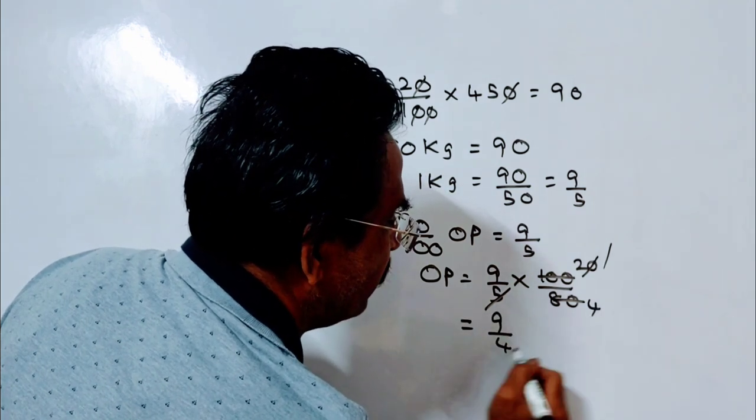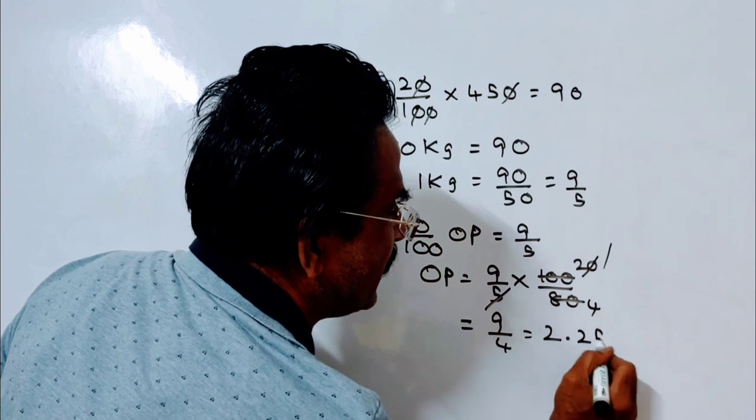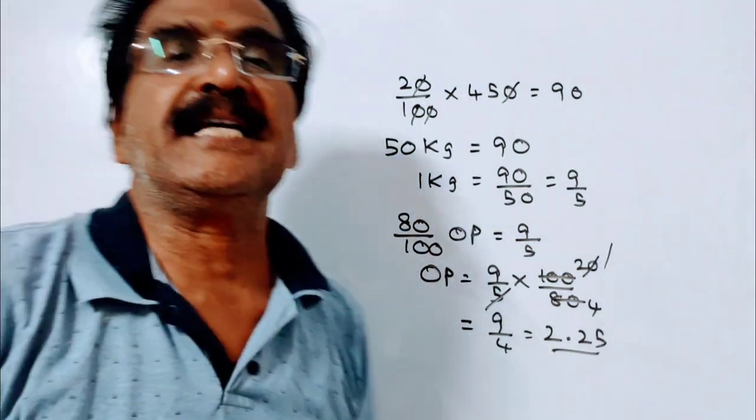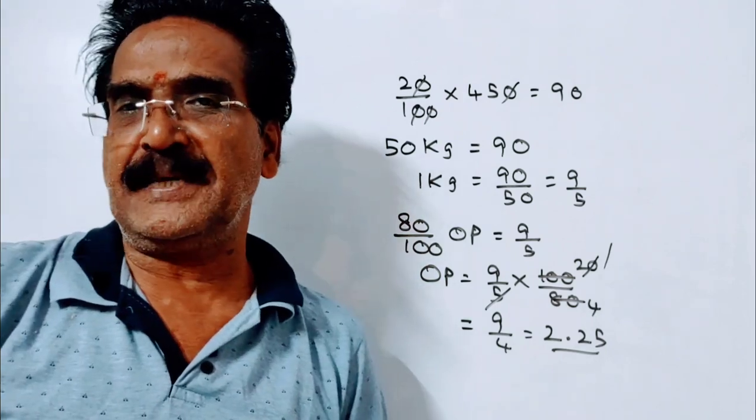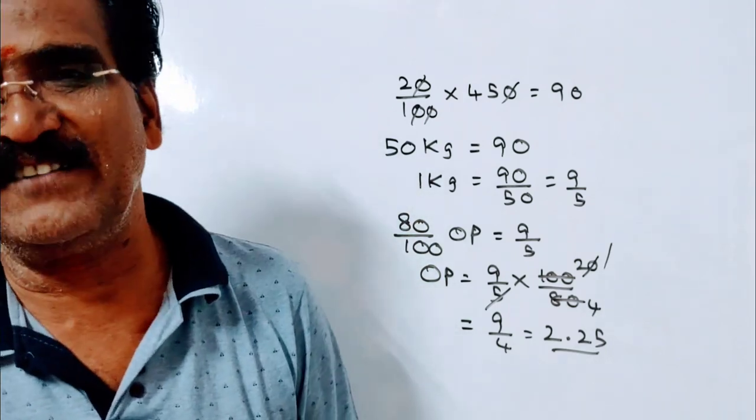9 by 4 means 2 rupees 25 paise. So the original price of the rice per kg is equal to 2 rupees 25 paise. Okay friends, thank you. Have a nice day.